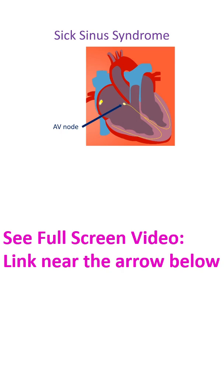AV node has a lower pulse rate and heart rate will be slower, known as junctional rhythm. AV node is at the junction between the upper and lower chambers of the heart.